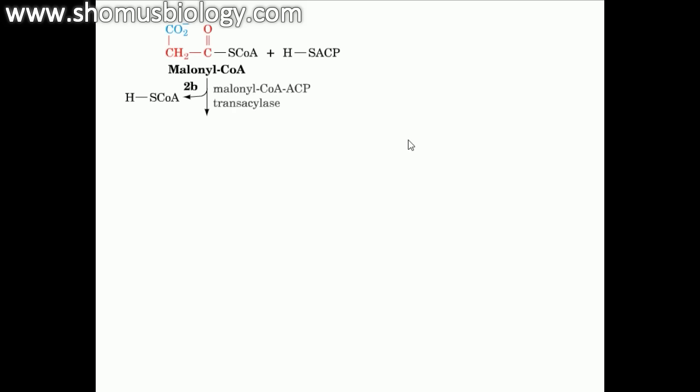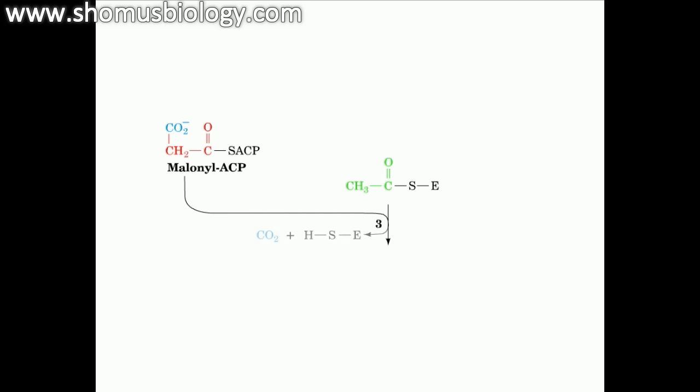Now, thirdly, the malonyl-ACP is produced from the malonyl-CoA and ACP by the enzyme malonyl-CoA-ACP transacylase. So it's simply, it's a transfer of the group ACP from one intermediate to the next intermediate throughout. The acetylated beta-ketoacyl-ACP synthase forms a reaction. From this reaction, it transfers its acetyl group to the malonyl-ACP which releases carbon dioxide.